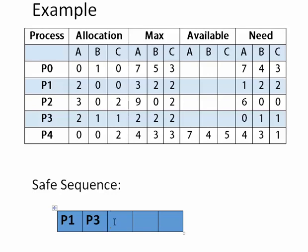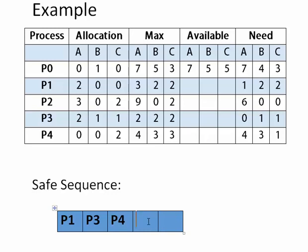Three processes — P1, P3, and P4 — have been completed. We cycle back to check P0 and P2. The need of P0 is 7 4 3 and our available resources are now 7 4 5, so the need of P0 can be satisfied. After completing, P0 releases its allocated resources of 0 1 0, making the new available 7, 5, and 5. We add P0 to the safe sequence.